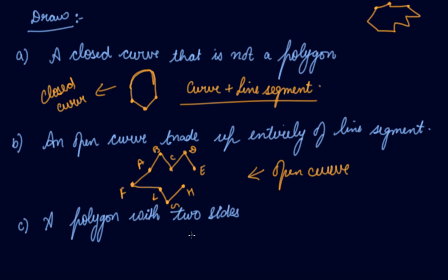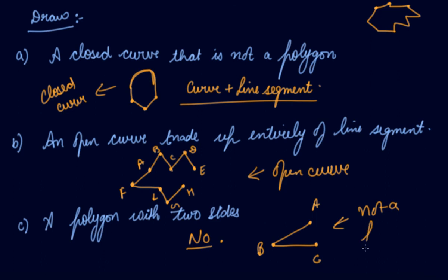A polygon with two sides — no, you cannot draw a polygon with two sides. A polygon is always a closed figure. For example, figure ABC is not a polygon just because it is not closed. In order to make it a polygon, we need to draw one more line segment to close it. So AB and BC alone — ABC — is not a polygon.